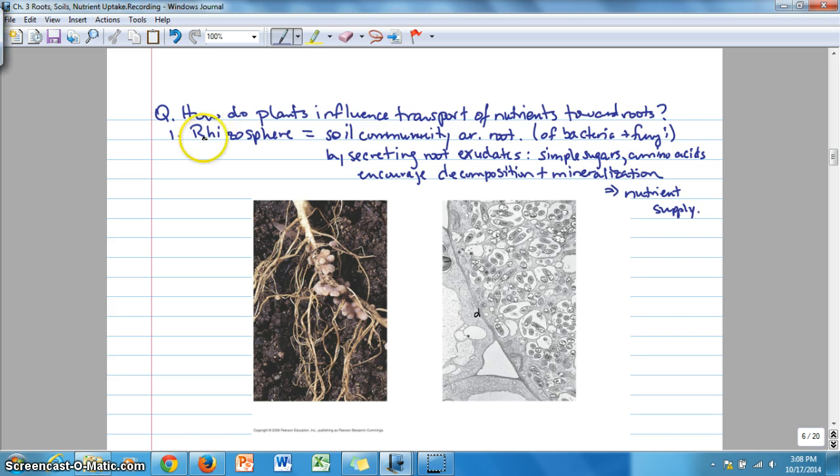That's one important way, the development of a rhizosphere. Another method or strategy is to develop or support symbiotic mutualistic relationships. A symbiosis or a mutualistic symbiosis is one where there are two partners, two different kinds of organisms that are in partnership, where it's a win-win situation. They each supply something that the other needs.